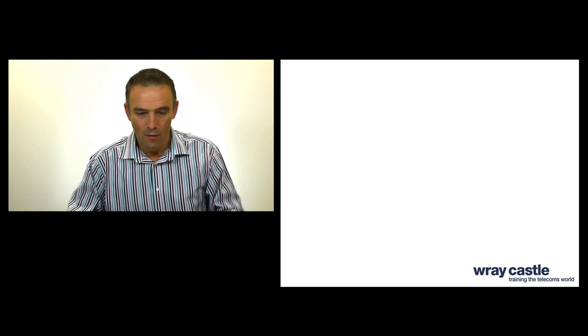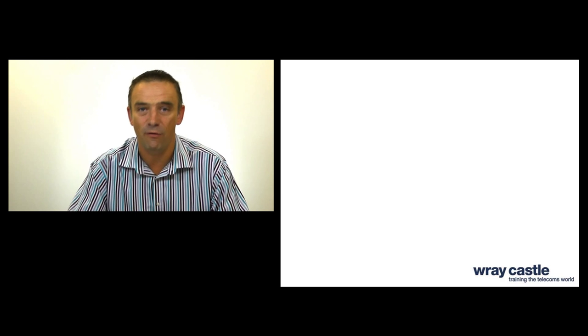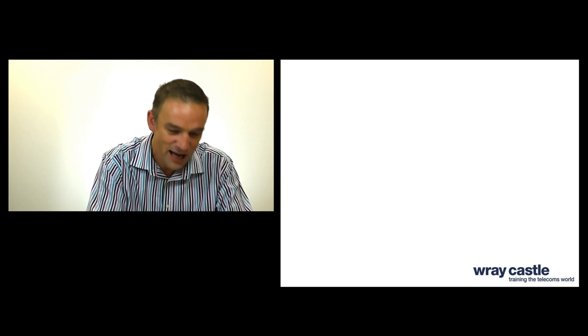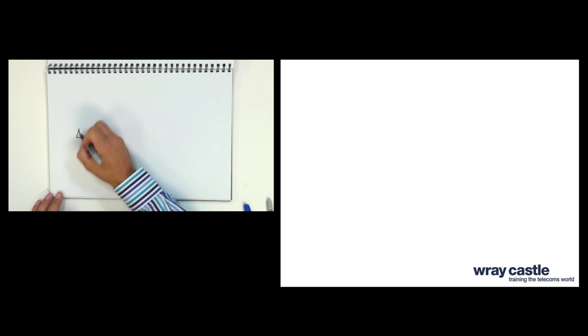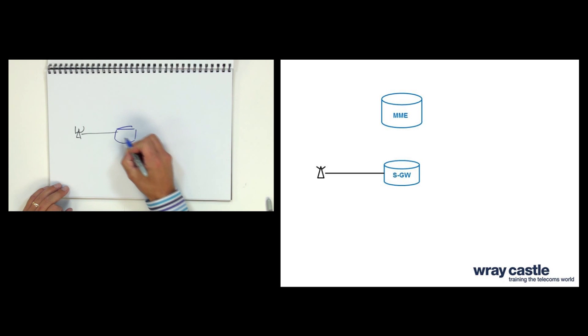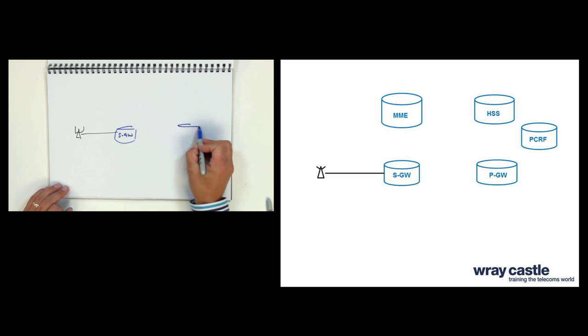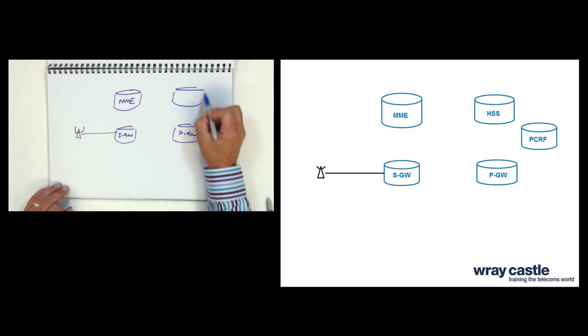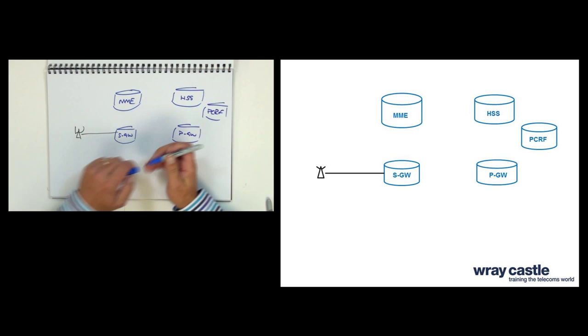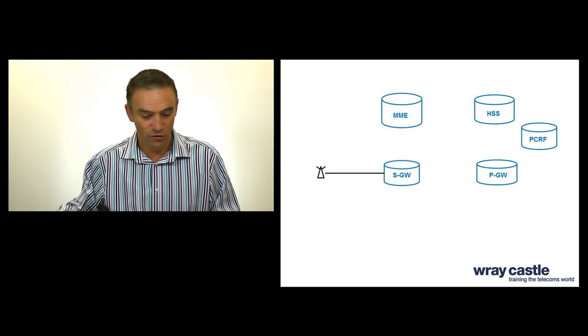Okay, so during earlier video shorts we discussed how we've evolved and we've got rid of this circuit switch domain and really we've just left ourselves with aEUTRAN and an evolved packet core. So it's this evolved packet core that we're going to look at. Now if you look at the evolved packet core itself, functionally there's only five nodes within the evolved packet core. So we have a serving gateway, we have a PDN gateway, we've got a mobility management entity, we've got a home subscriber server, and then the final node we have is called the PCRF or the policy and charging resource function.